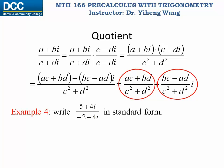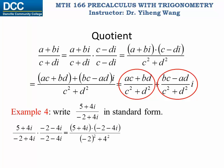Let's look at this example: write five plus four i over negative two plus four i in standard form. We multiply by the coefficient negative two minus four i over negative two minus four i — the complex conjugate of negative two plus four i. The denominator becomes negative two squared plus four squared, which is 20, a real number. We then calculate the numerator using complex multiplication, separate the parts, and get three-tenths as the real part and negative seven-fifths i as the imaginary part.